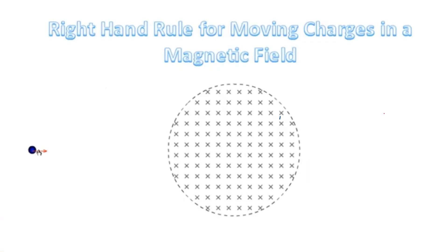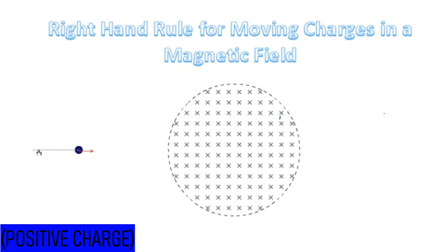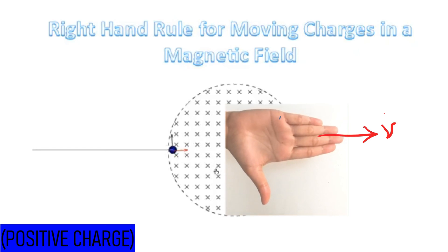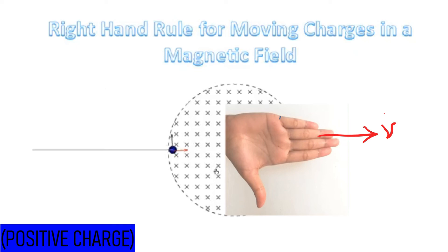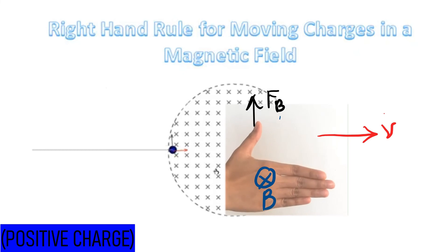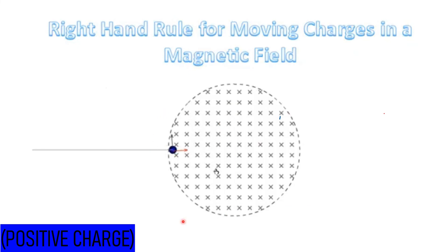Let's see this situation: a positive charge particle is moving to the right and the direction of the magnetic field is into the page. This red arrow shows the direction of velocity. To check the direction of the magnetic force at this point, open your right hand, point your fingers in the direction of velocity, and turn your palm to face into the page — the direction of the magnetic field. Your thumb will then show the direction of the upward magnetic force. That is why the charged particle continues to deflect upward.